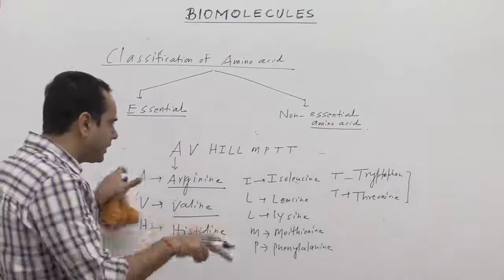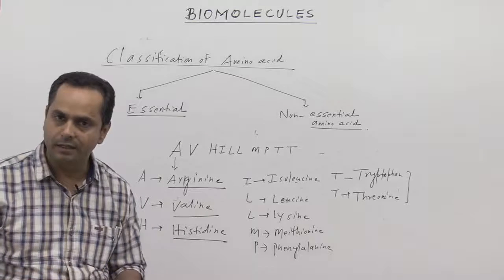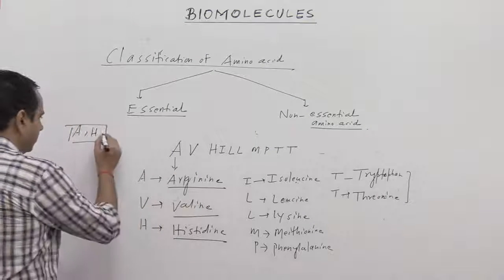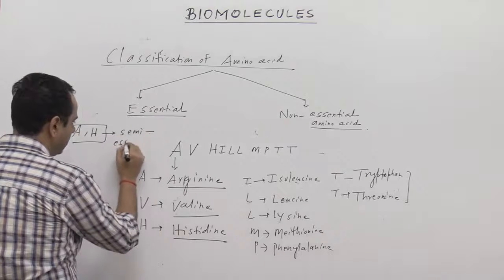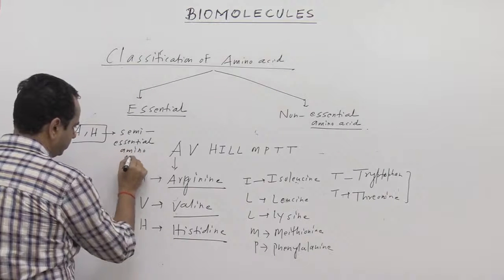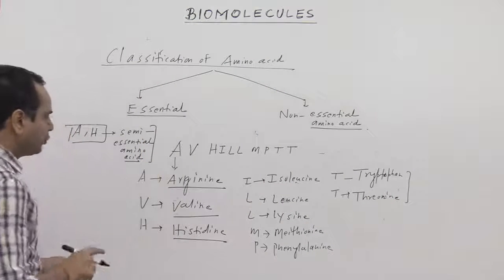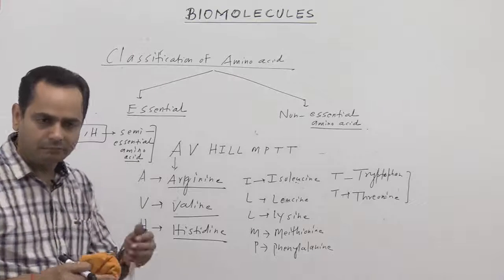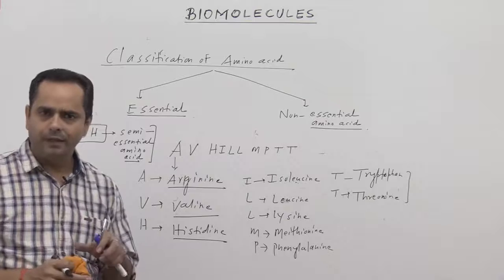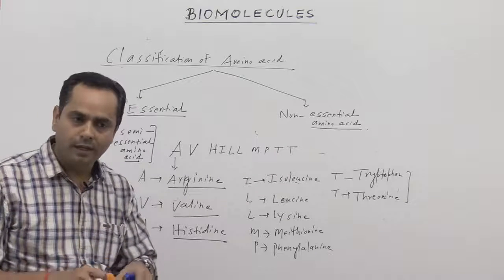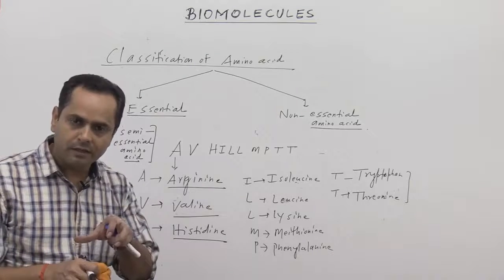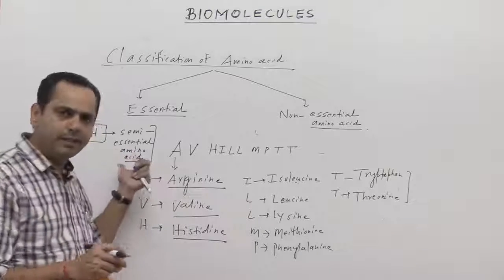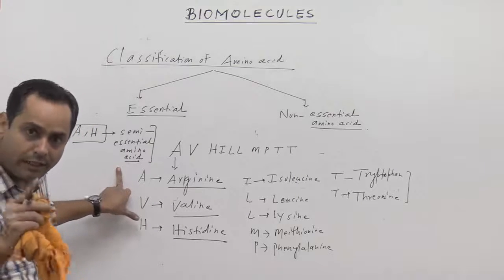Whatever names are not included in the essential part — A and H, that is arginine and histidine — are called semi-essential amino acids. These two amino acids cannot be synthesized in the infantile stage or early stages; they are formed by adult body tissues but not by infantile tissues. So in infants, these two must come from external sources, but adults can synthesize both. That is why they are called semi-essential — essential only in infants, not in adults.